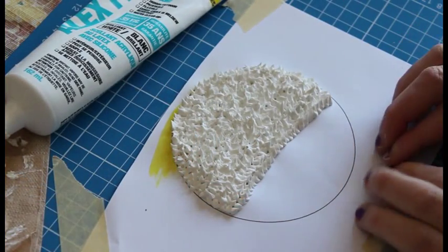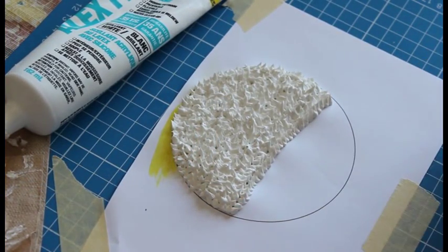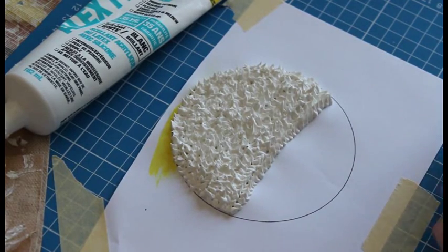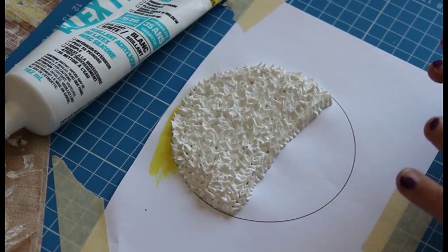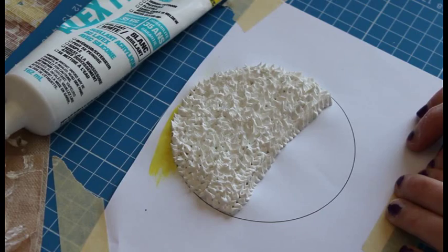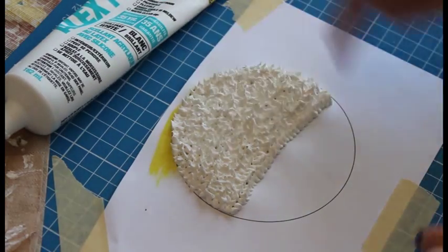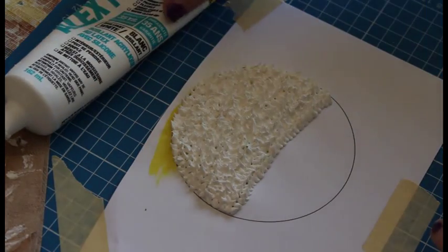For the center of the flower you want to go ahead and print off your template which I have provided for you to download for free. And you want to cut into two sections. Once you've cut it into sections you just want to tape your template down.